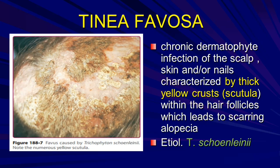Tinea capitis favosa (favus) is caused by Trichophyton schoenleinii. Note the numerous yellow scutula present. This is a chronic dermatophyte infection of the scalp, skin, and hair nails with thick yellow crusts.